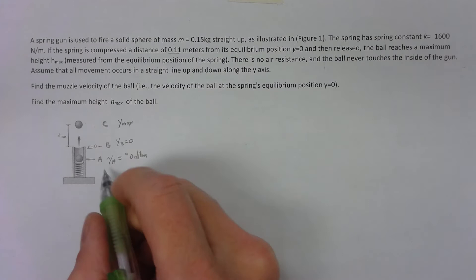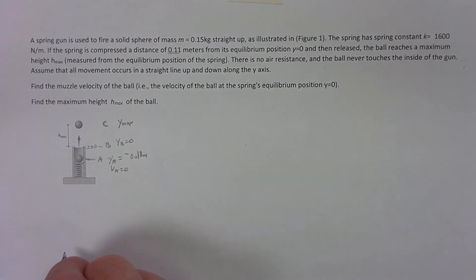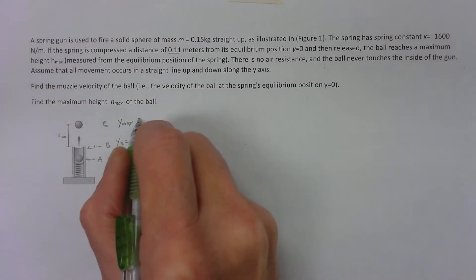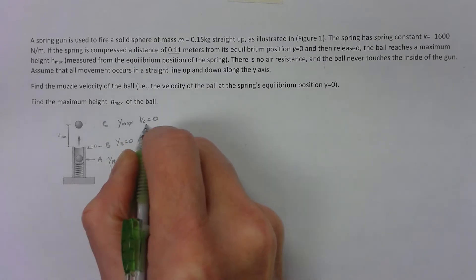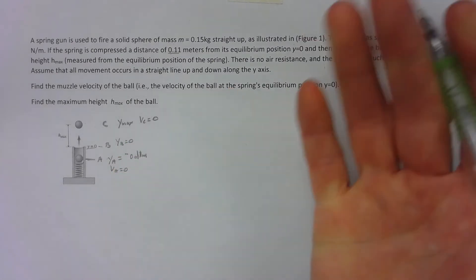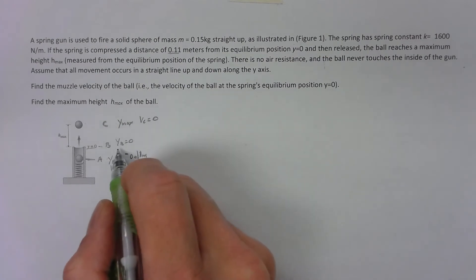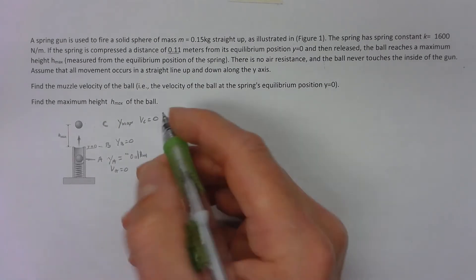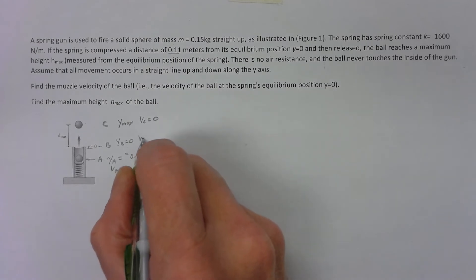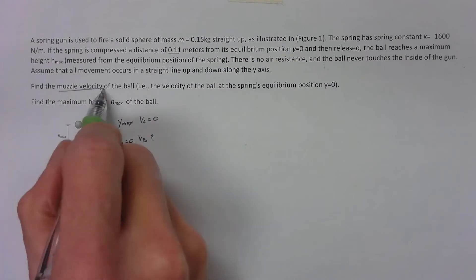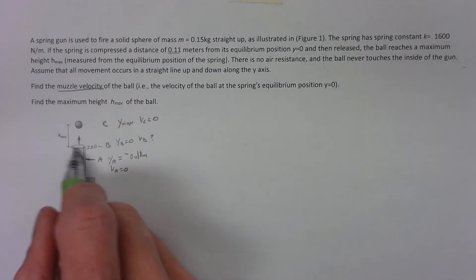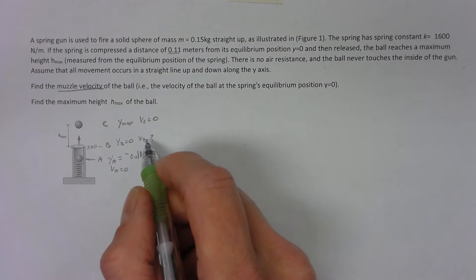What else do we know? Down here the velocity at a is zero. At max height, that velocity at c has got to be zero. Here we got another velocity, velocity at b, it's not zero, we don't know what that is. Matter of fact, that's what we're trying to find - muzzle velocity, the ball right when it leaves the muzzle.